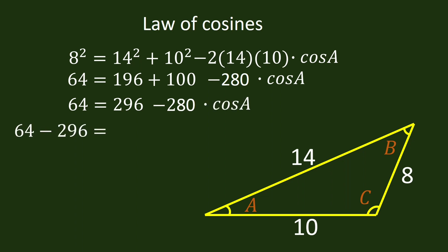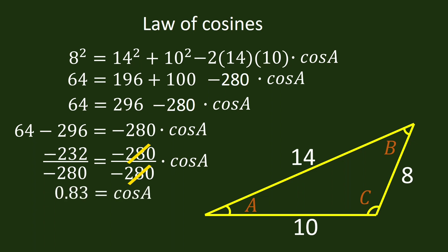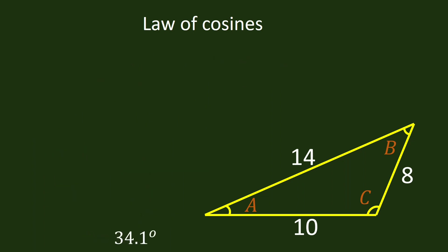Subtract both sides by 296. So 64 minus 296 is negative 232. Bring down negative 280 cosine A. Divide both sides by negative 280. 0.83 is equal to cosine A. A is equal to inverse cosine 0.83. So A is approximately 34.1 degrees.